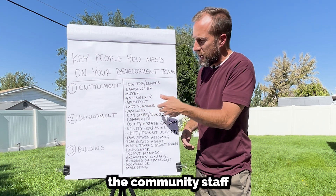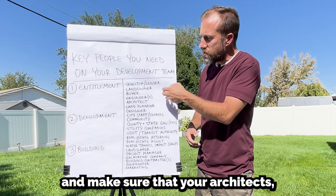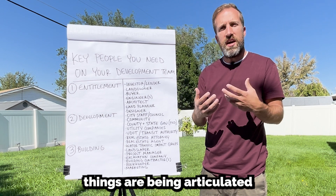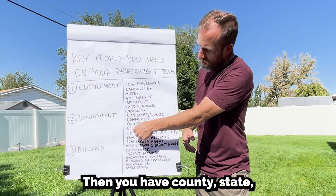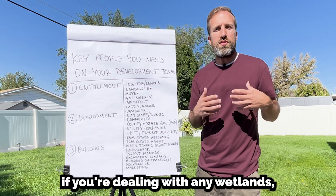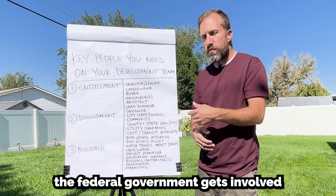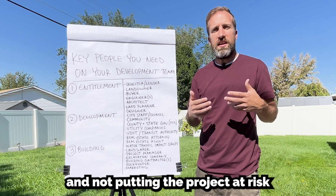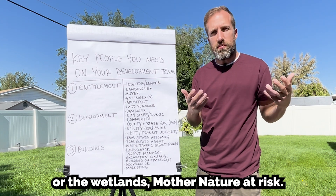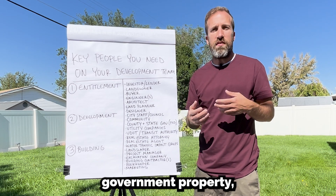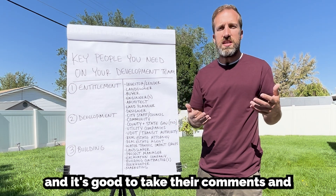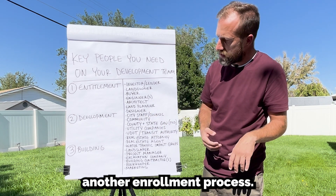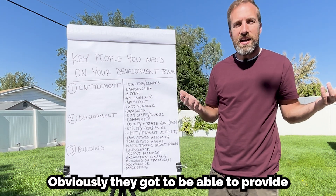Make sure your architects, land planners, designers, and engineers are all on the same page in the way things are being articulated. Then you have county, state, and federal government. For example, if you're dealing with wetlands, the federal government gets involved to make sure you're designing something that maintains the wetlands. I've done a lot of development around government and BLM property, and it's good to take their comments and communication throughout that process.